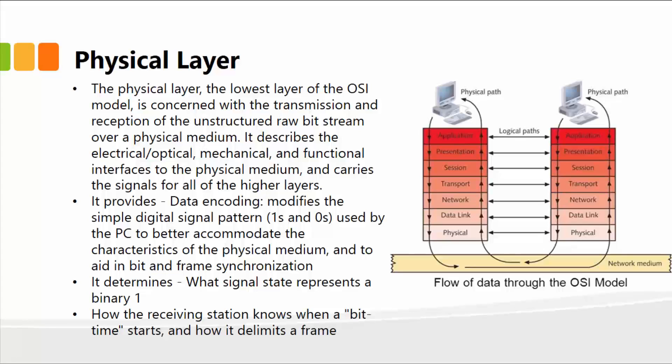It describes the electrical, optical, mechanical, and functional interfaces to the physical medium, and carries the signals for all the higher layers. A couple of other functions of the physical layer is data encoding. It modifies the simple digital pattern, ones and zeros within the bits, used by the computer to better accommodate the characteristics of the physical medium, and to aid in bit and frame synchronization.